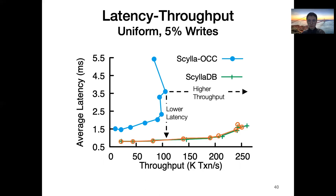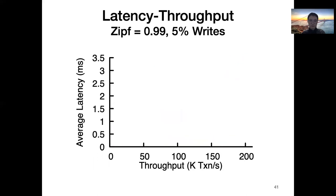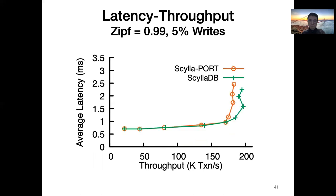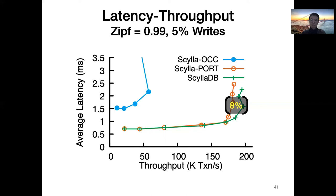Now let's look at ScalaPort. Its performance almost exactly matches simple reads, and clearly ScalaPort outperforms OCC. Under skewed workloads with 5% writes, even under highly contended conditions, ScalaPort closely matches the performance of simple reads. In the worst case, ScalaPort incurs less than 8% overhead in both latency and throughput. ScalaPort significantly outperforms OCC under high contention because OCC aborts and retries read-only transactions.